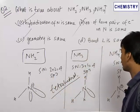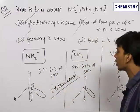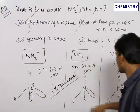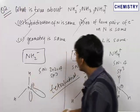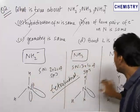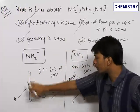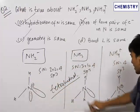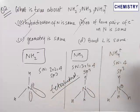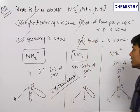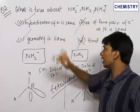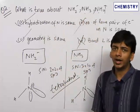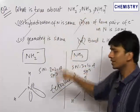Option four: bond angle is the same in all three cases — this is also wrong. In NH₂⁻ we have two lone pairs, in NH₃ we have one lone pair, and in NH₄⁺ we have no lone pairs. Due to different degrees of lone pair–bond pair repulsion, the bond angles will be different in all three cases. NH₂⁻ has the most repulsion and NH₄⁺ has none. Therefore, the final answer is that in all three compounds, the hybridization of nitrogen is the same and the geometry of the compound is the same.